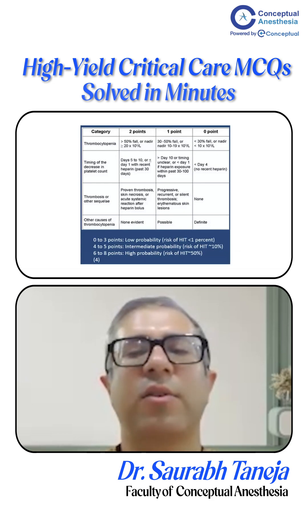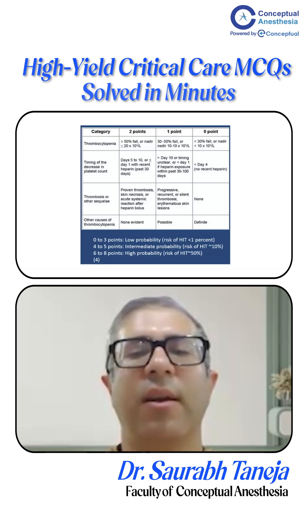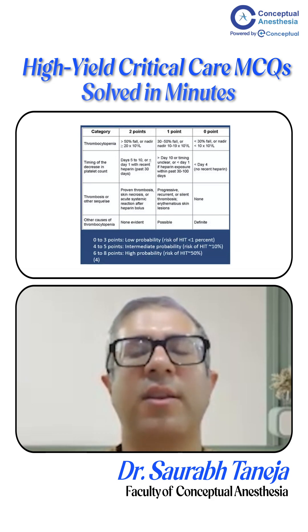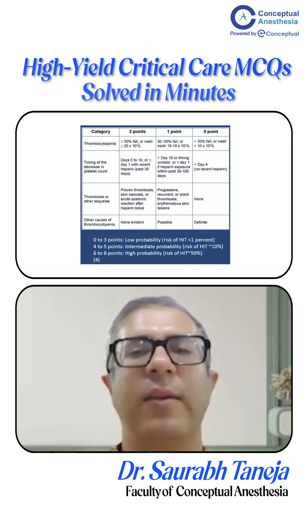The third T is thrombosis. Proven thrombosis or skin necrosis scores 2 points, while no thrombosis scores 0 points. The fourth T is other causes of thrombocytopenia. If no other cause is found, we give 2 points; if another cause of thrombocytopenia is identified, we give 0 points.